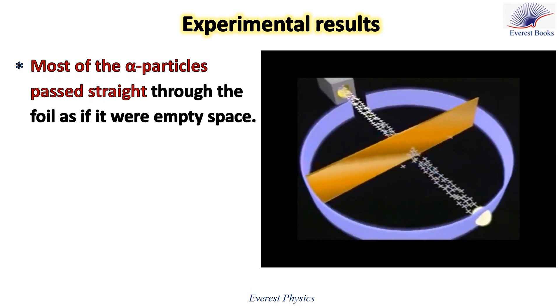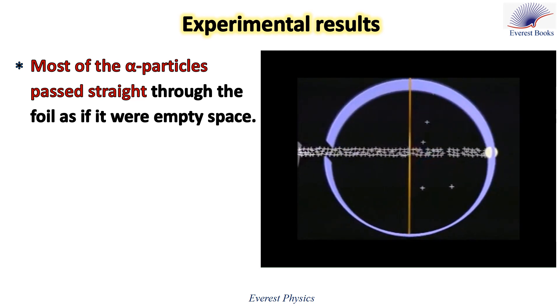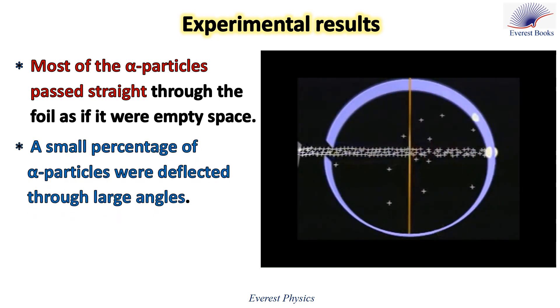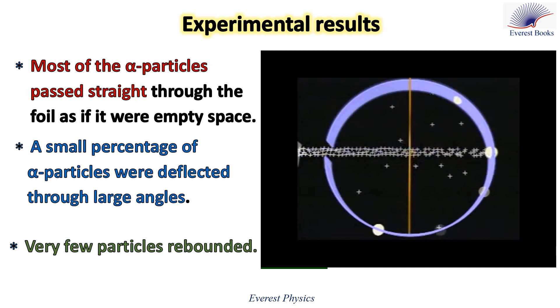We observe that most of the alpha particles passed straight through the foil as if it were empty space. A small percentage of alpha particles were deflected through large angles, and very few particles rebounded.